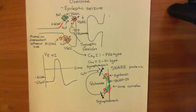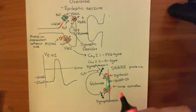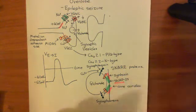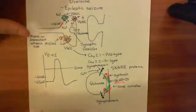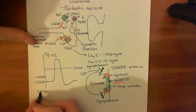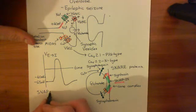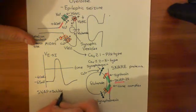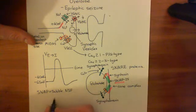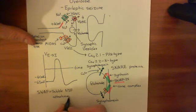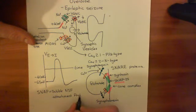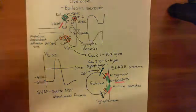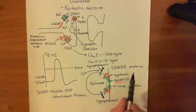SNAP — specifically SNAP25 — in this context stands for soluble NSF attachment protein. And then SNARE stands for SNAP receptor, though the P is dropped for some reason, so SNARE really stands for soluble NSF attachment protein receptor.